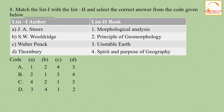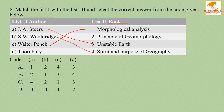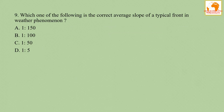Question number eight: match list one (author) with list two (book). JS Trace wrote Unstable Earth; SW Wooldridge wrote The Spirit and Purpose of Geography; Walter Penck wrote Morphological Analysis; and Thornbury wrote Principles of Geomorphology. The correct answer is option D.